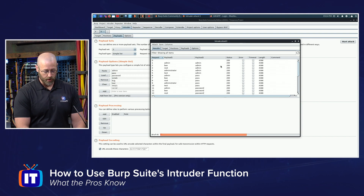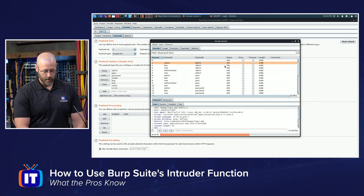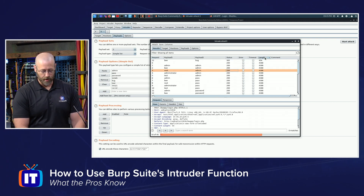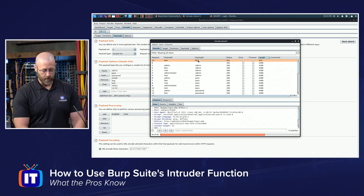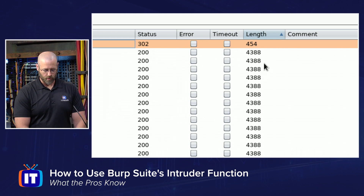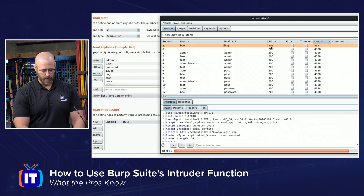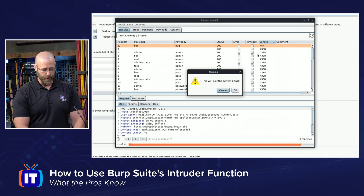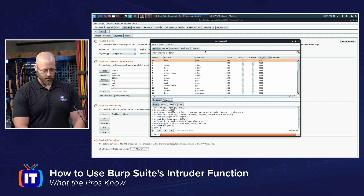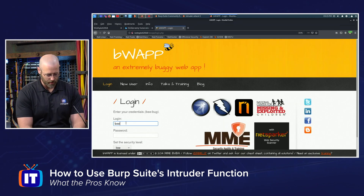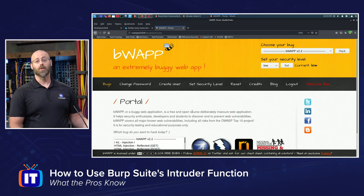Once we're done, we should be able to look through these requests, responses, and status codes. Length can be a great indicator — you'll notice that one result has a different size: 454 instead of 4388. And it has a different status, which was a 302, which is a redirect. Noticing that, I'll want to try those credentials. It was 'b' and 'bug.' Going back to BWAP and trying 'b' and 'bug' — that allows me to log in. And there you go.